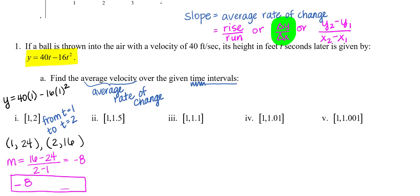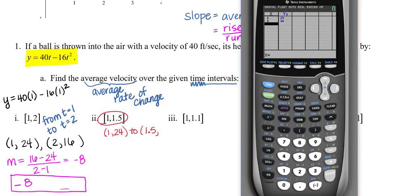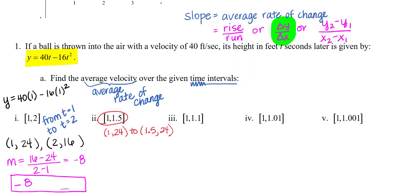I would do this again for the next one. I'm going from 1 to 1 and a half, so from (1,24) to (1.5, something). I'll go back to my calculator and type in 1.5 and I get 24. If the y values are the same, it's a horizontal line connecting them, so this slope is 0.